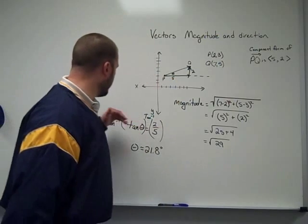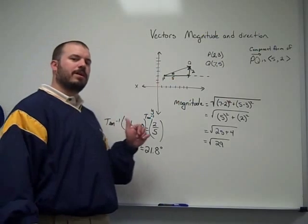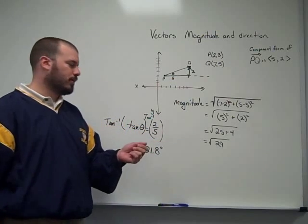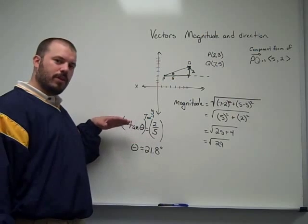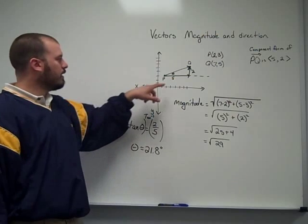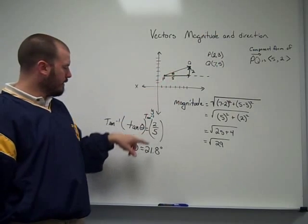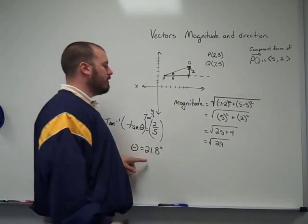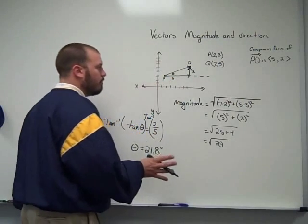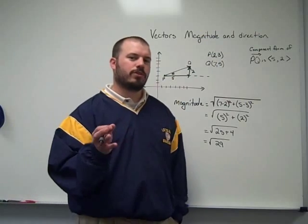If you're unsure about this step, I do have a video posted about finding angle measures using trig. So please view that if this part is a little bit confusing. But we're using inverse trig in order to find that angle. So my direction is 21.8 degrees.